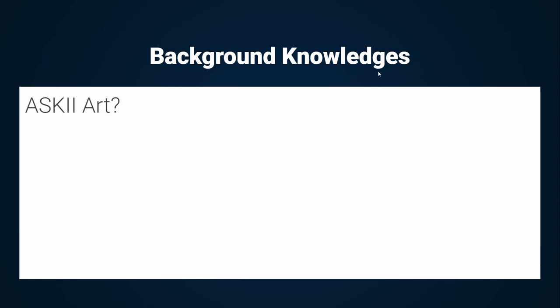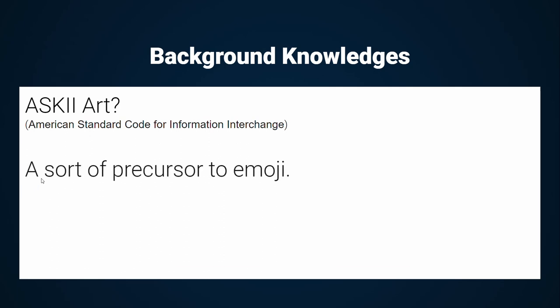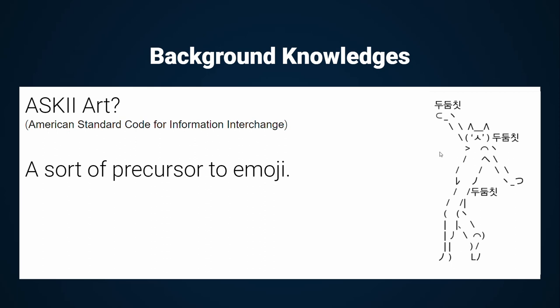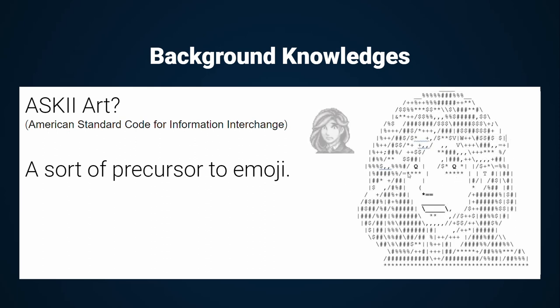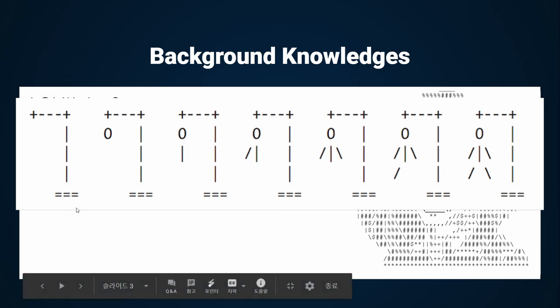Is everyone ready? Here we go! There are a few new concepts, such as ASCII art. ASCII in ASCII art stands for American Standard Code for Information Interchange. To simplify it, it is a sort of precursor to emoji — like a cat dancing in a picture, or a person having a face expression. We are going to use ASCII art to design our Hangman game.